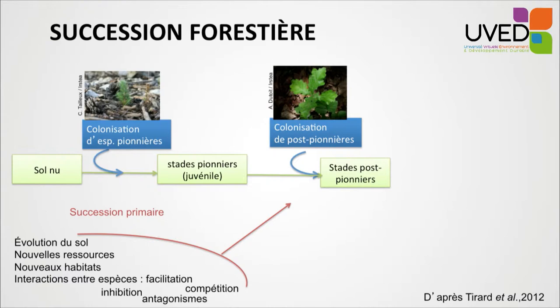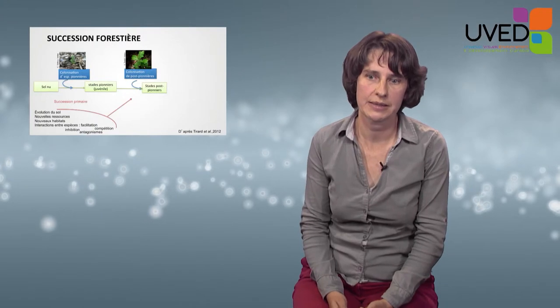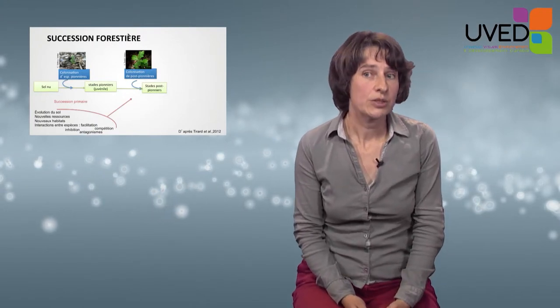Later, the pioneer species will die, the individuals will decompose, and their decomposition will enrich the soil. Because the soil is richer, other species, slightly more demanding, will settle down. This is the post-pioneer stage, and the new species will then constitute new feeding resources for new potential species, creating new habitats. Progressively, other species will come and colonize the area following the presence of the initial species. Forest succession is therefore something that depends on the interaction between species.